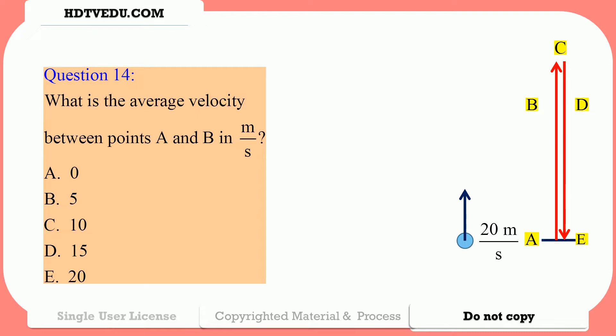Question number 14: What is the average velocity between points A and B in meters per second? Is it 0, 5, 10, 15, or 20? Question number 15: What is the average velocity between points B and C in meters per second? 0, 5, 10, 15, or 20?